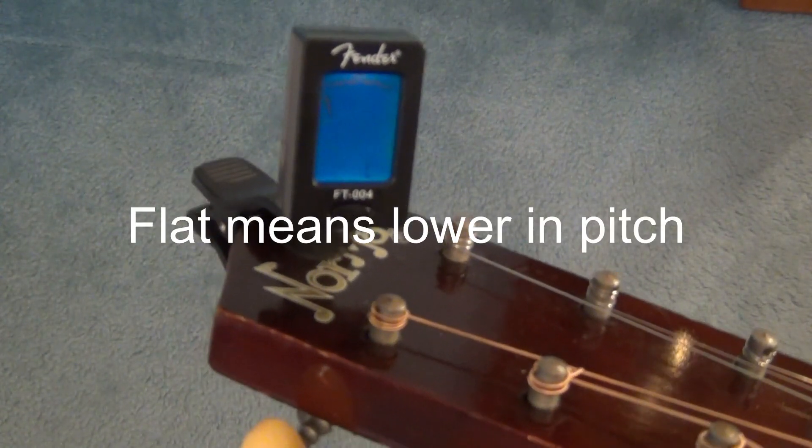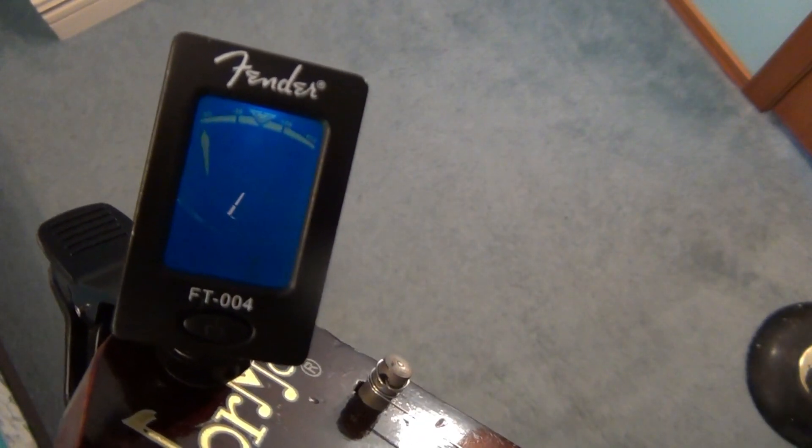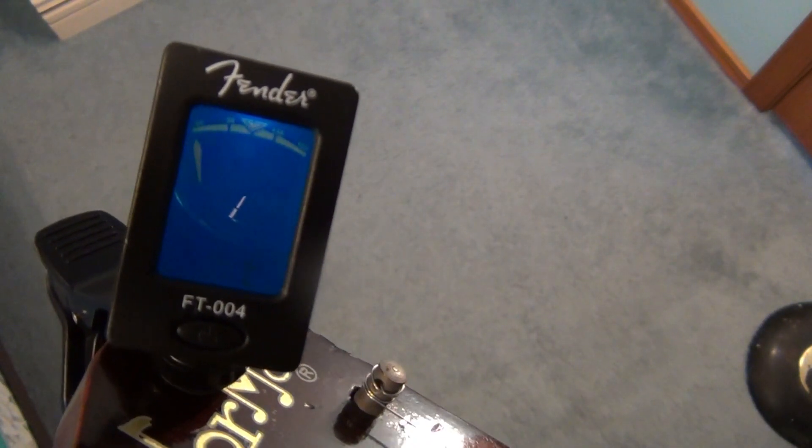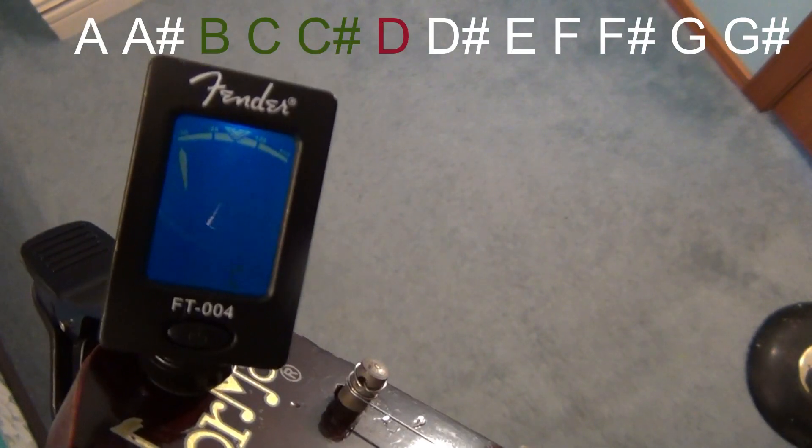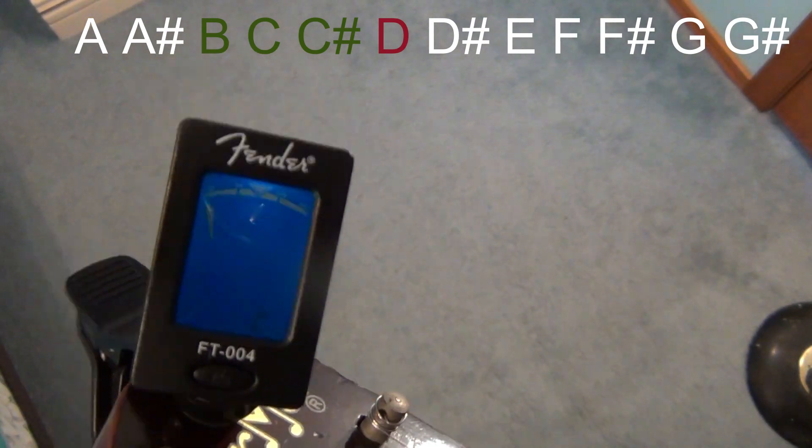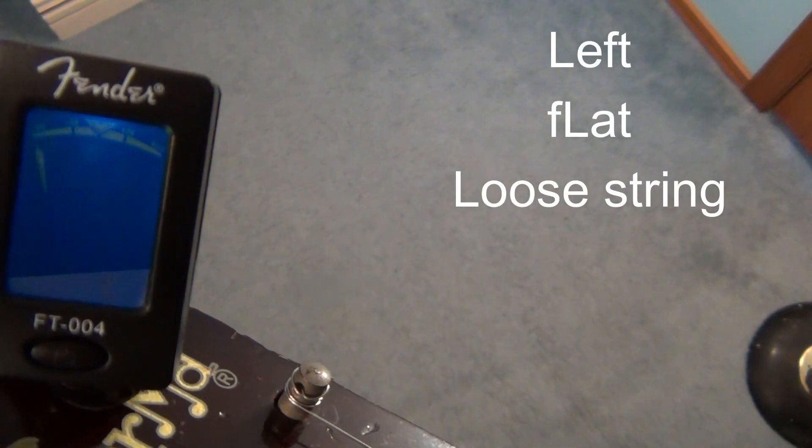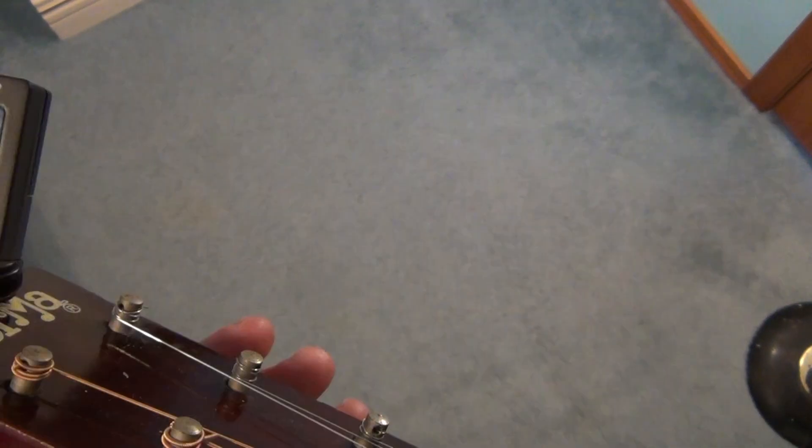Flat means your pitch is below or lower than the target note. If you're tuning to that same fourth or D string, it may show up as a C-sharp, C, or a B even. These notes are to the left of the D if you look at the chromatic scale. So the pitch is too low. The string is too loose. So think of the letter L in the words left, flat, and loose. So you have to tighten that string.